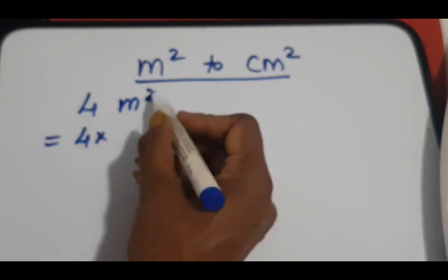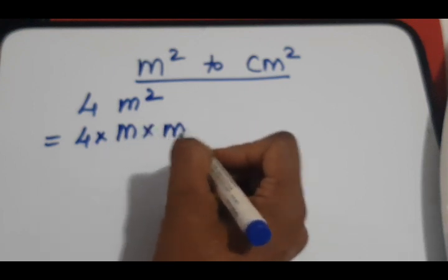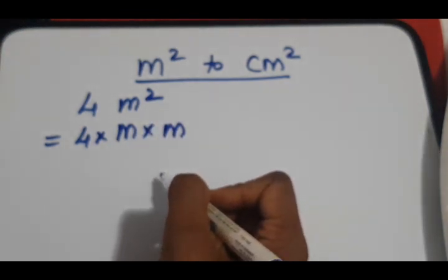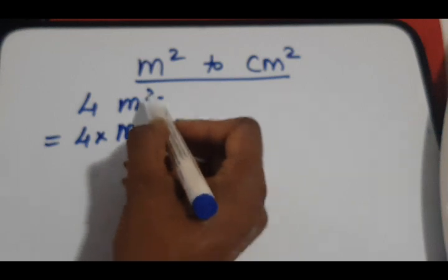But we replace the meter square by meter times meter following the index laws, because we know that meter times meter is meter square.